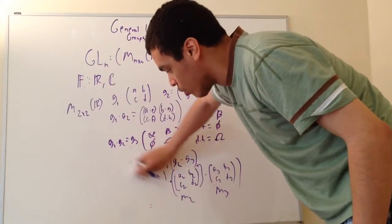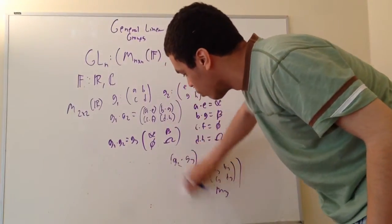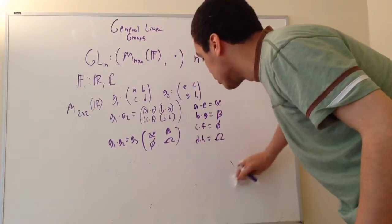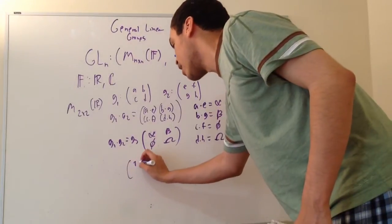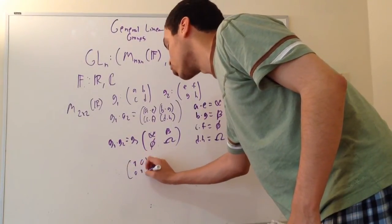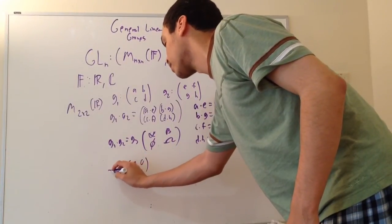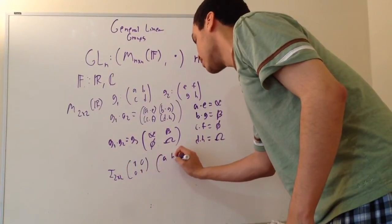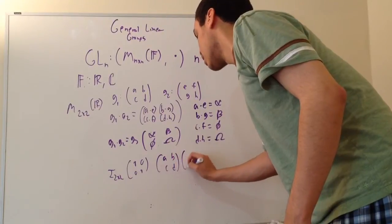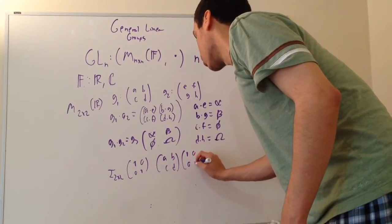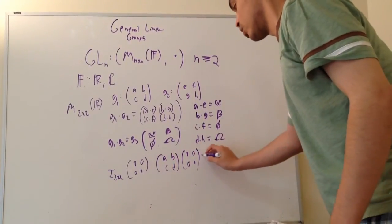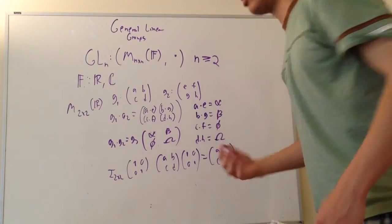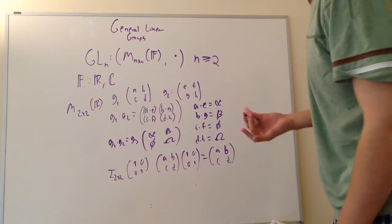Now, is there an identity element? Of course there is — what is the matrix identity element? It's simply the identity matrix I. For 2-by-2, that's 1, 0, 0, 1. If we have matrix A, B, C, D times 1, 0, 0, 1, we just get A, B, C, D back. That's the identity matrix — you know this from linear algebra. So the identity matrix exists.